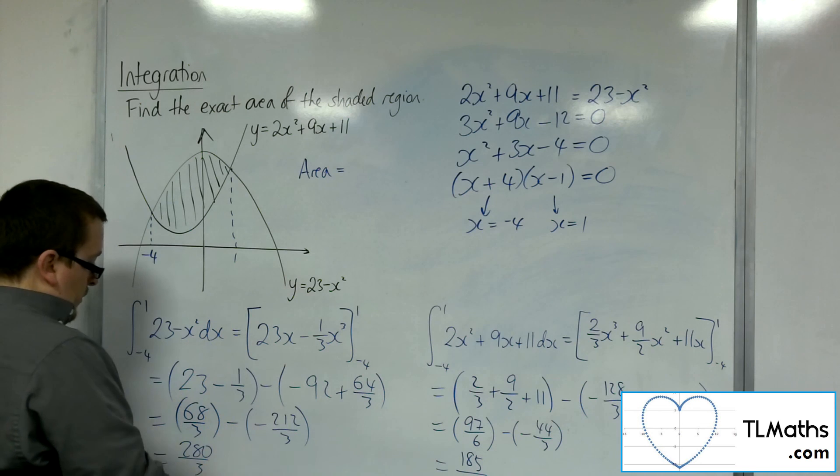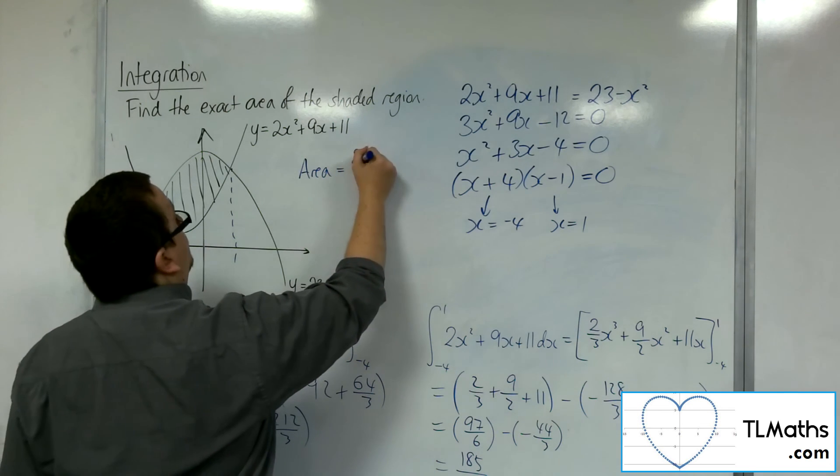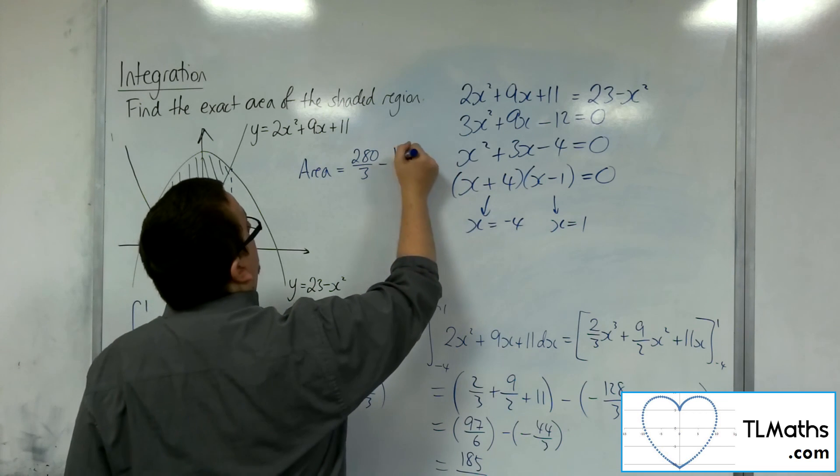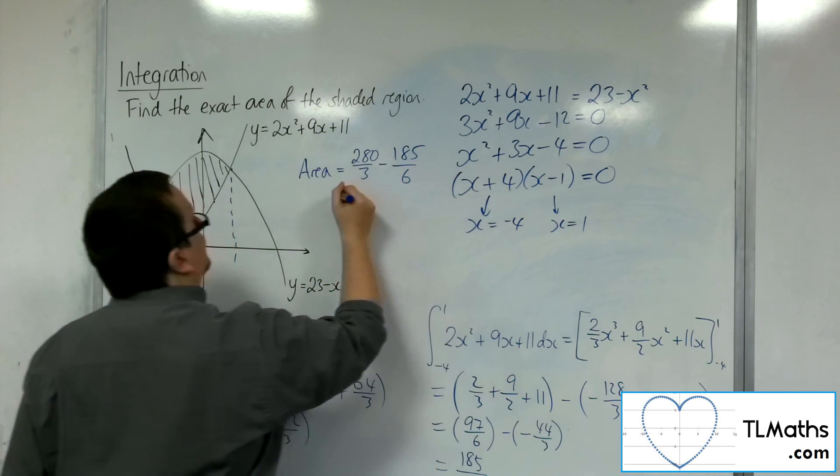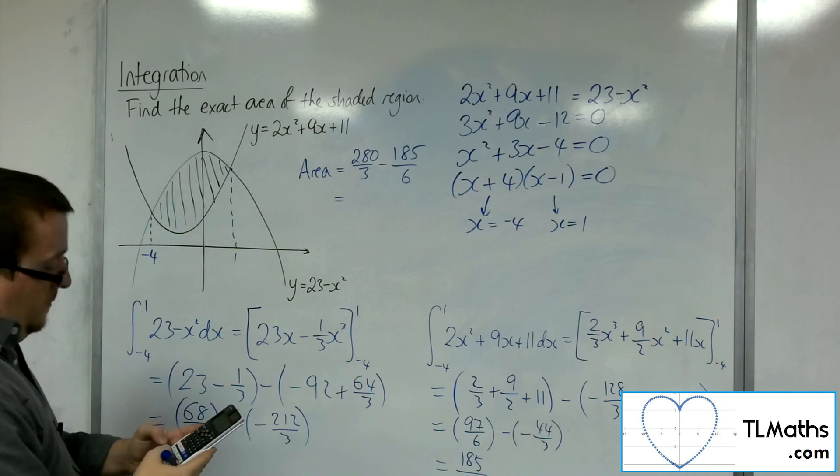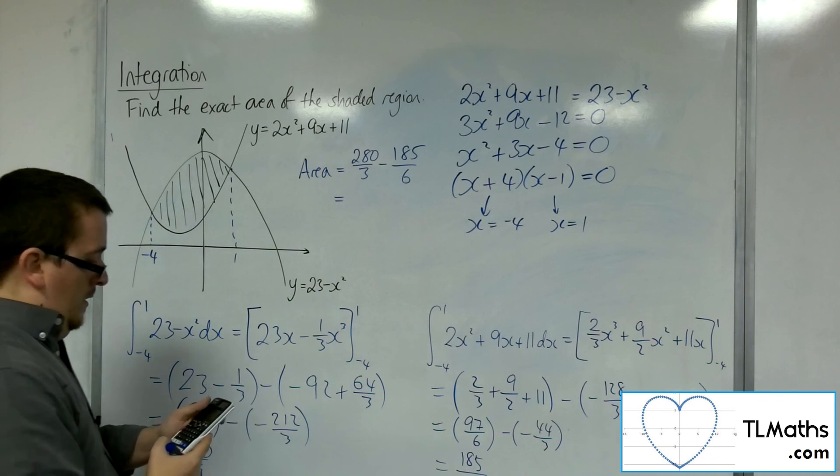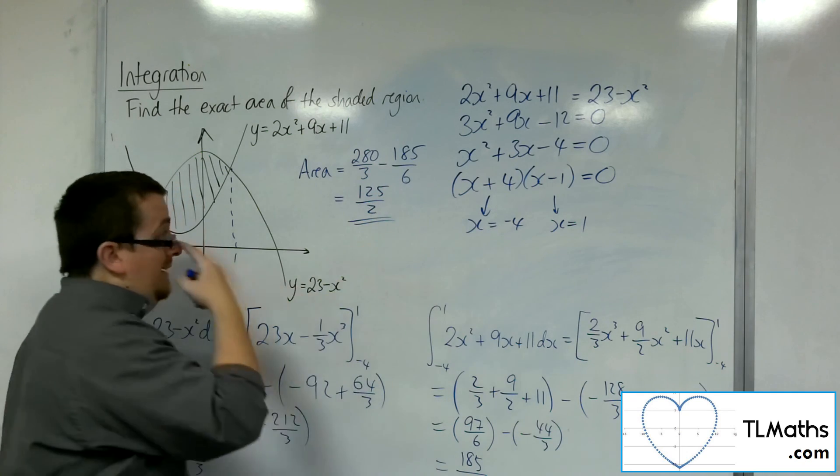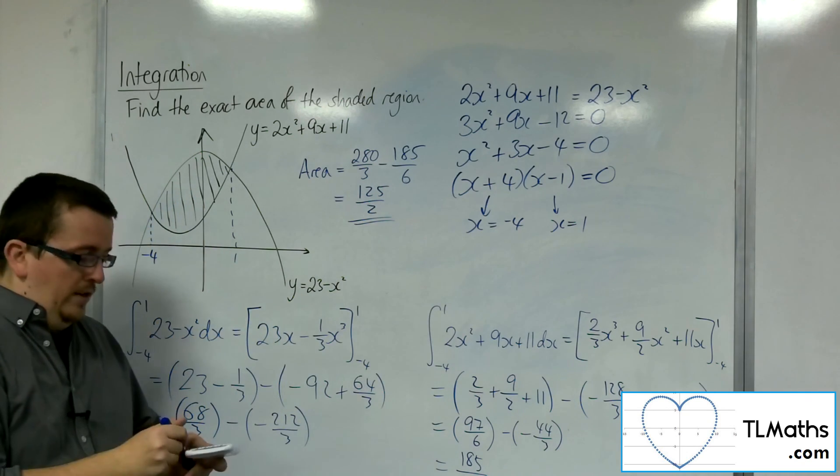is going to be equal to the 280 over 3, take away the 185 over 6. So 1 take away the other, and that gets me 125 over 2. And that's the exact area of the shaded region.